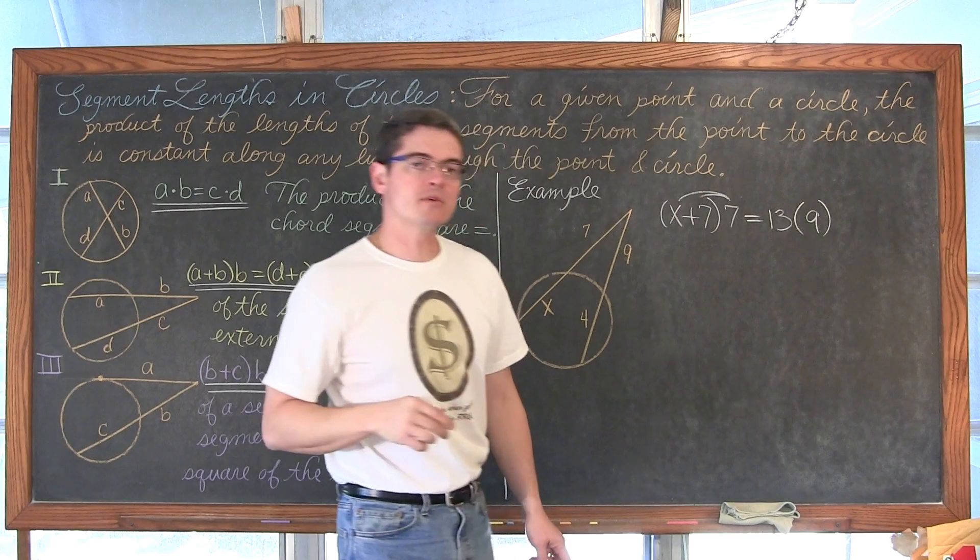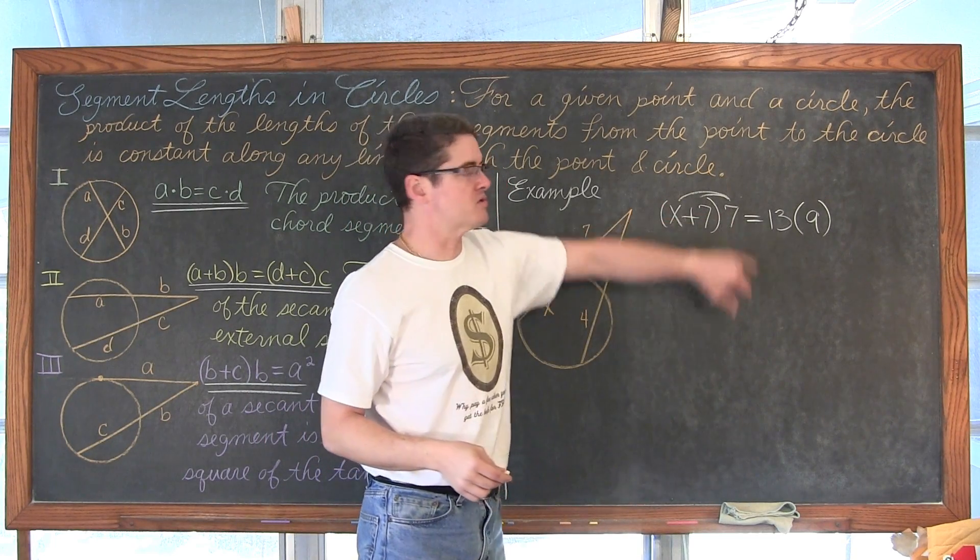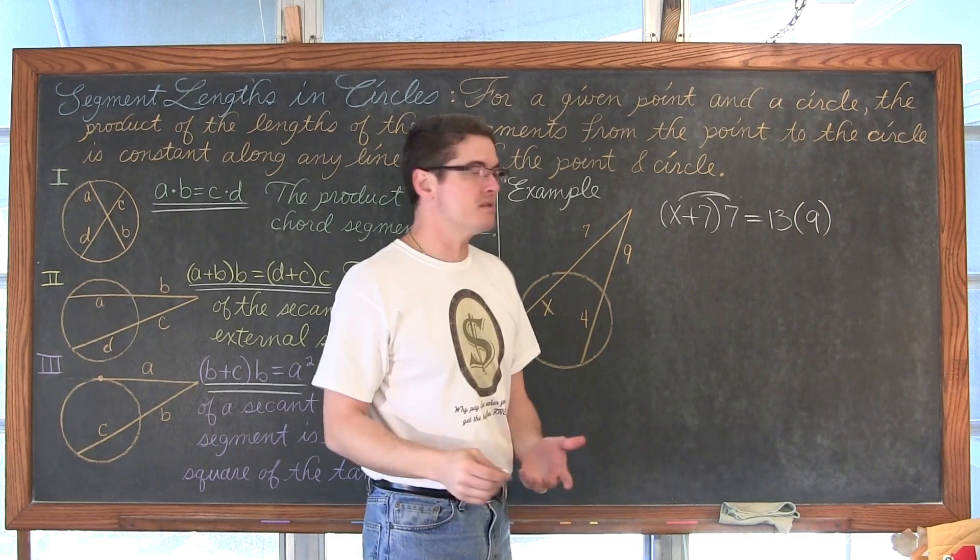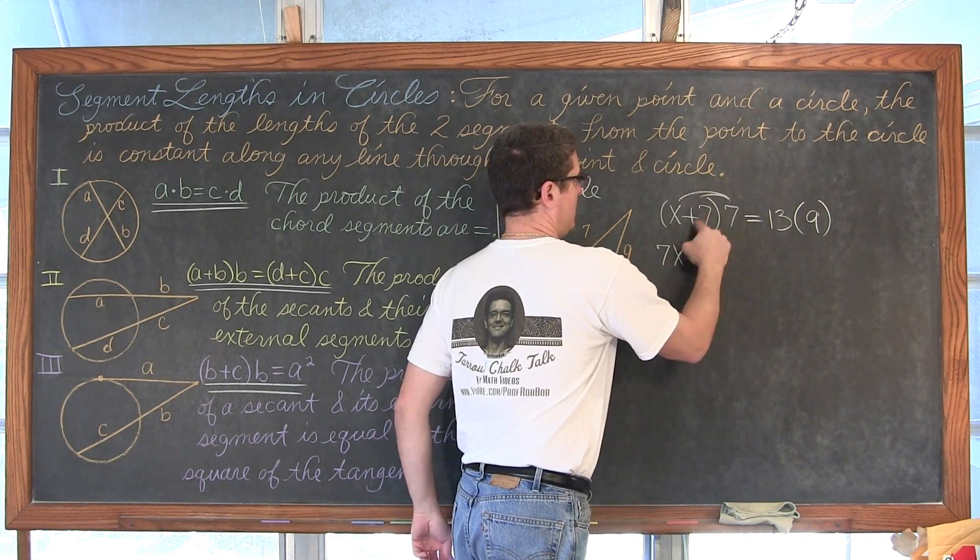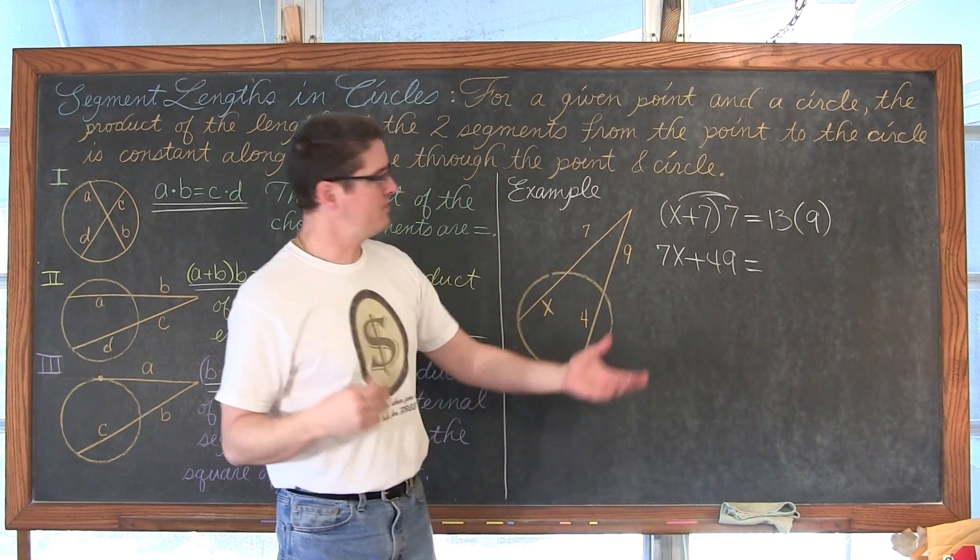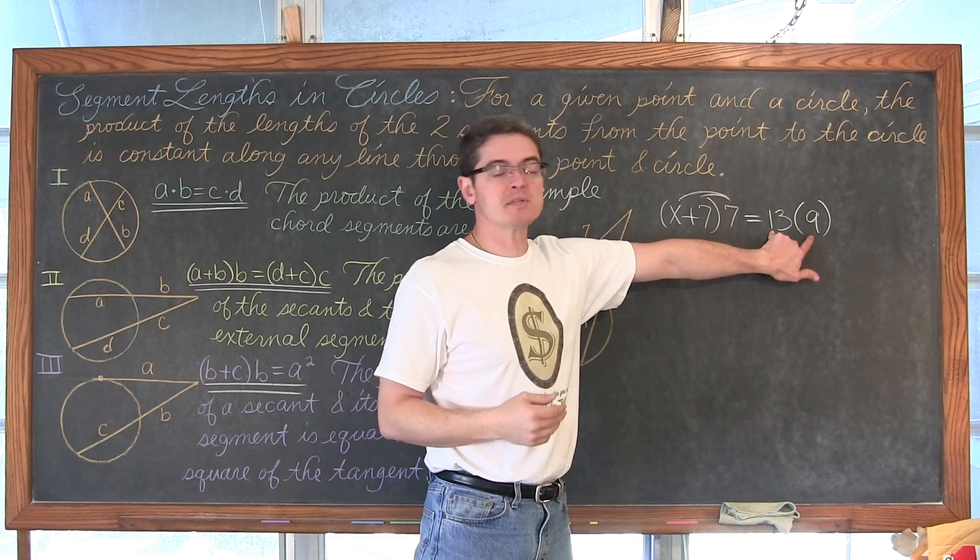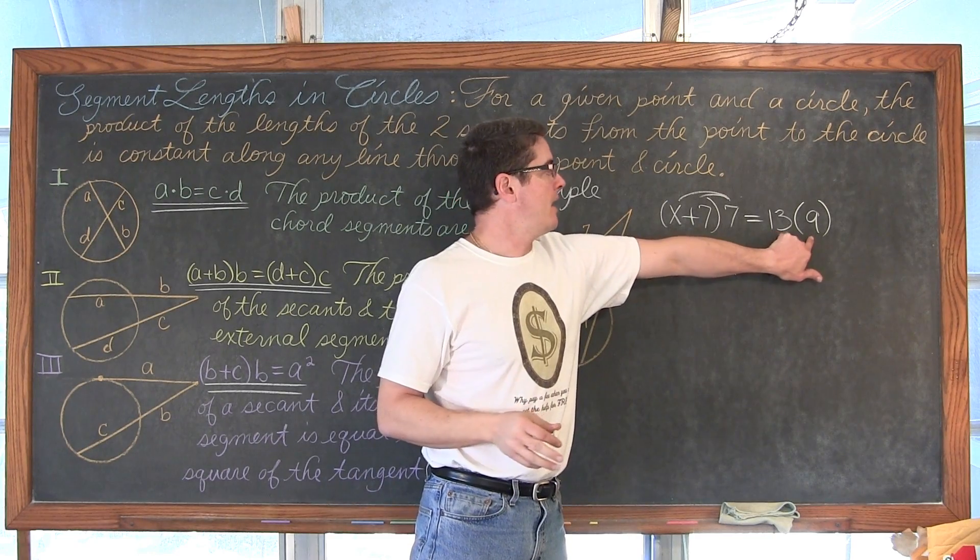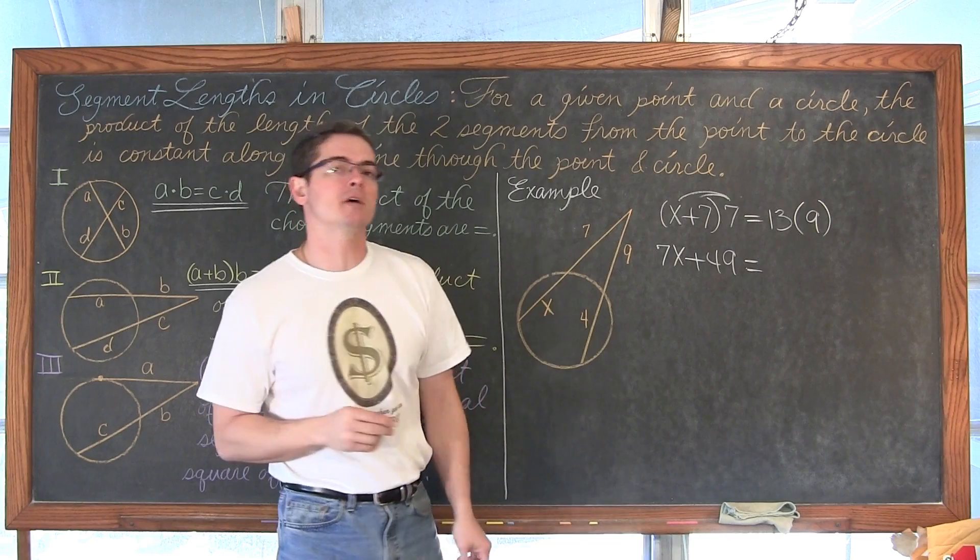We are going to have to distribute through those parenthesis. We have 7x plus 49 is equal to 13 times 9. Well, 9 times 10 is 90, and 9 times 3 is 27. So 90 and 27 is 117.